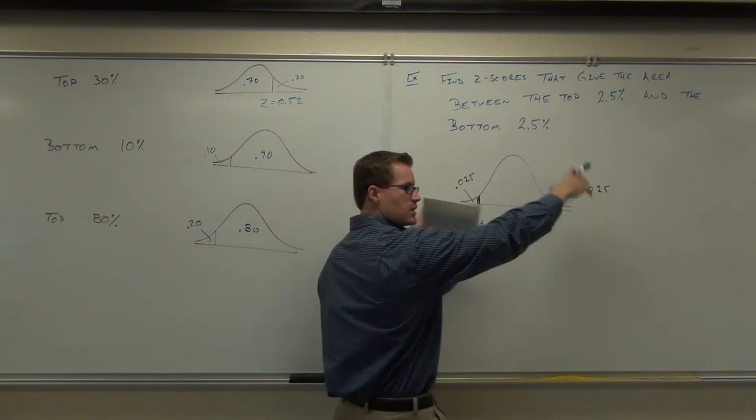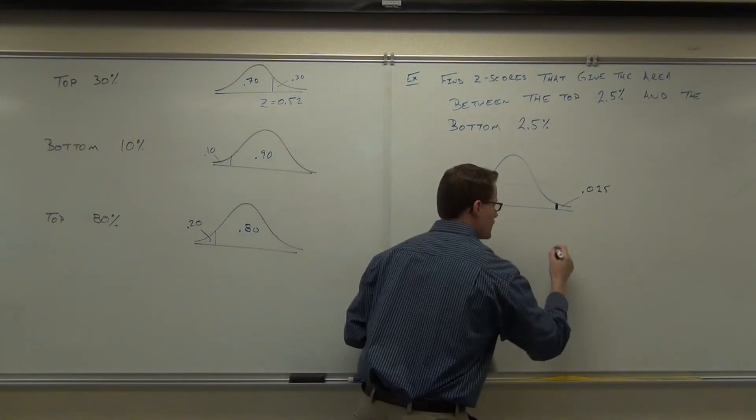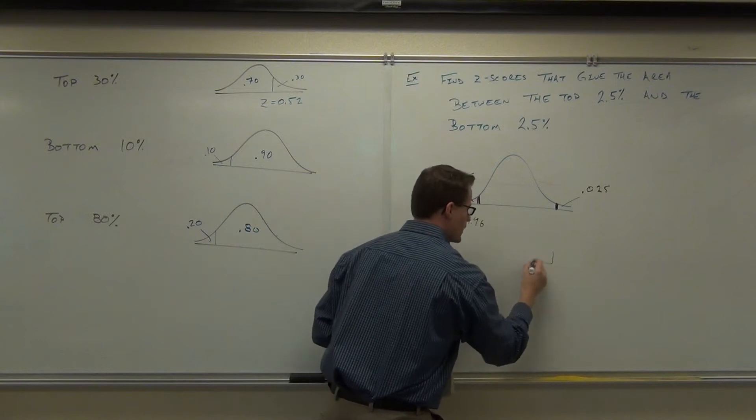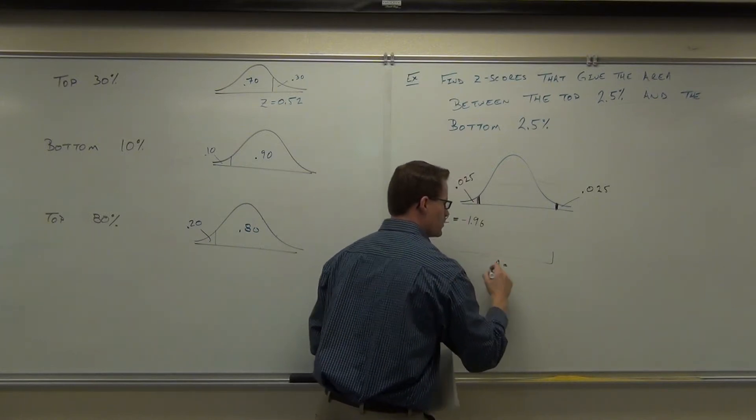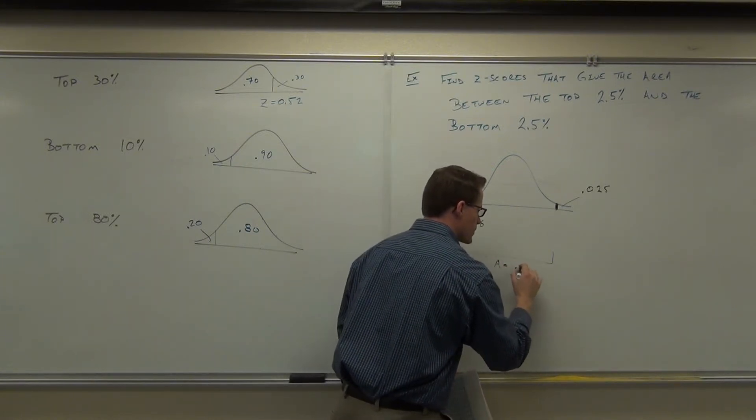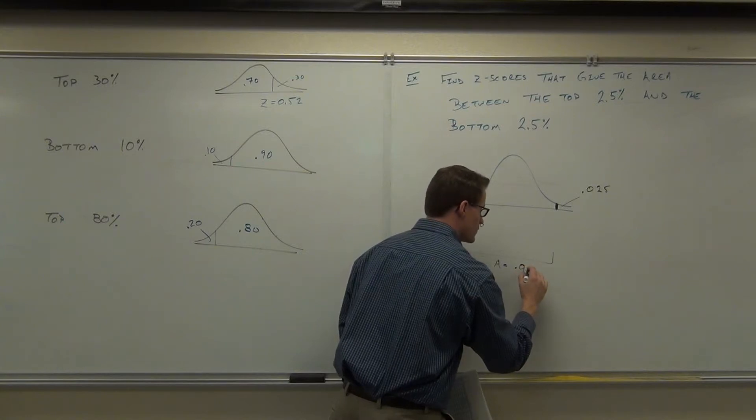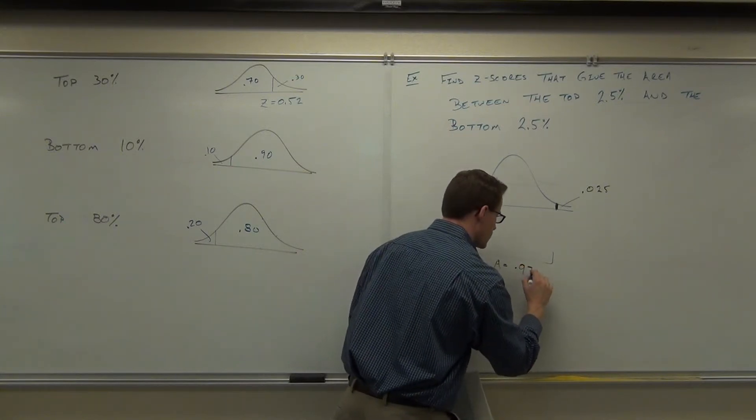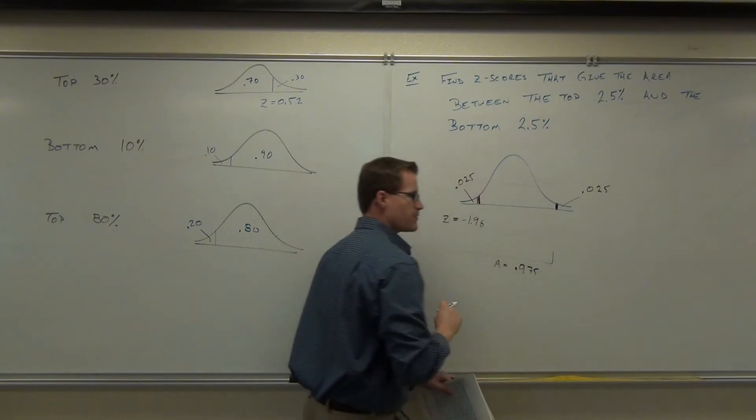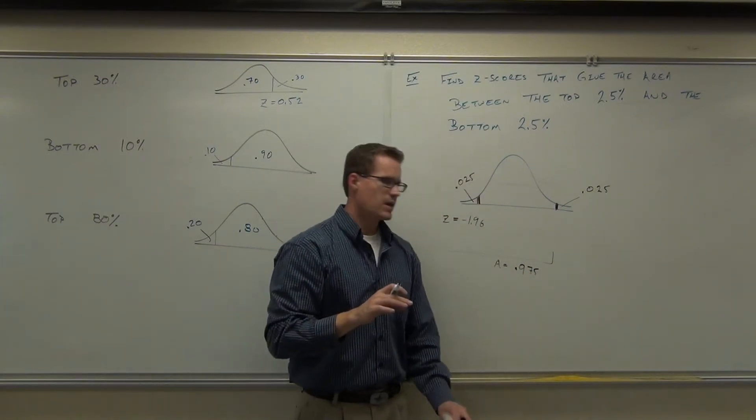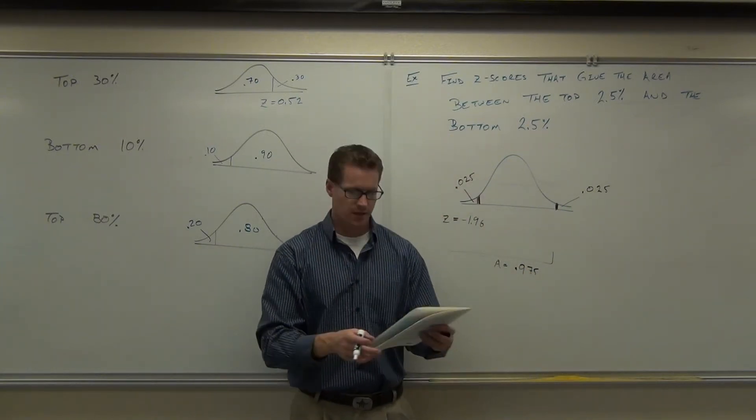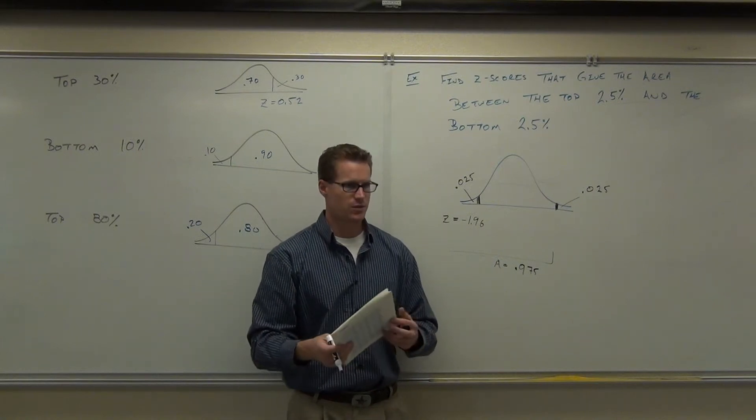Okay. So if this whole thing is equal to 1, then the area to the left of this one would be 1 minus that, or 0.9, I'm sorry, what was it again? 0.975. If you look up 0.975 in your table, do that, or use your calculator if you'd like. I just want to verify this with you.